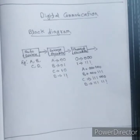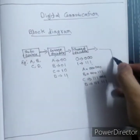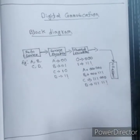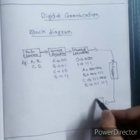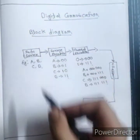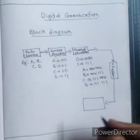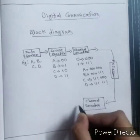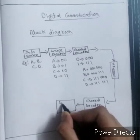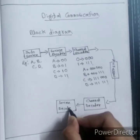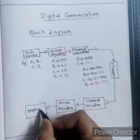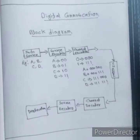The function of the channel encoder is to add redundant bits which will help the receiver side to decode the signal properly. This message then passes through the channel. At the receiver side, we have a channel decoder, then a source decoder, and finally the destination where the signal should be received. This is the basic block diagram of digital communication.